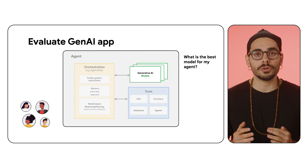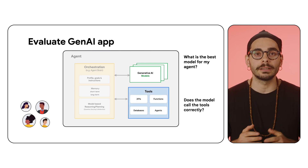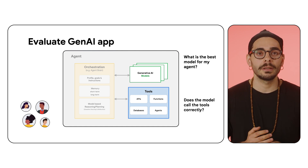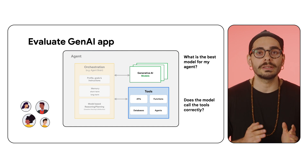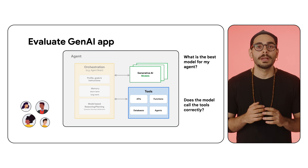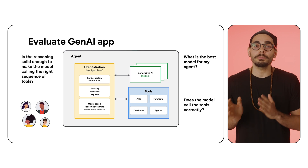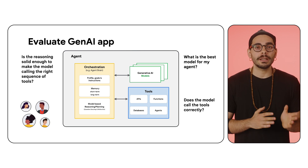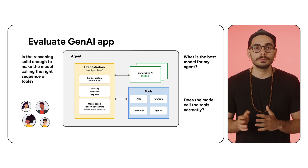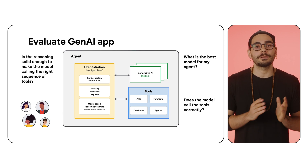Beyond model selection, we need to make sure our model uses its tools correctly. Does it call the right APIs and query the right database? Accurate tool use is the key for reliable Generative AI agents. But it's not just about single tool calling — tool order matters. Does the agent plan to use the correct tools to reach the goal? We need to check that it switches tools logically and efficiently.